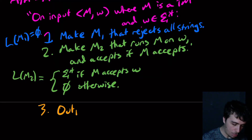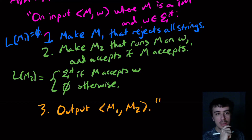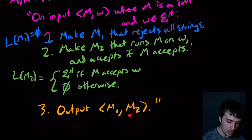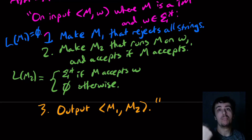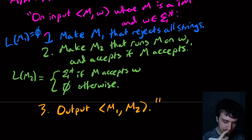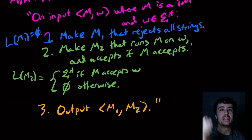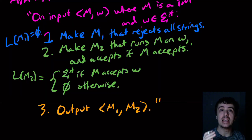Step three: output the pair ⟨M1, M2⟩. If M accepts w, then M2 accepts everything, so the two machines don't have the same language — we get something in the complement of EQTM. If M does not accept w, the two machines have the same language — we get something in EQTM, and therefore not in EQTM complement.